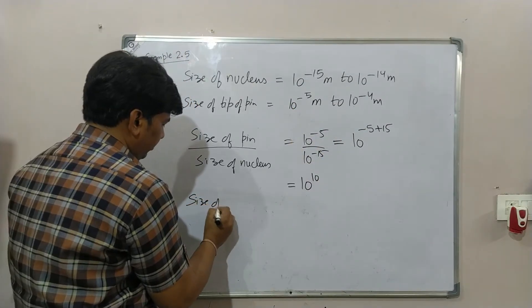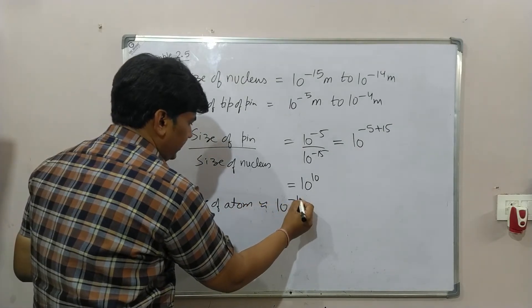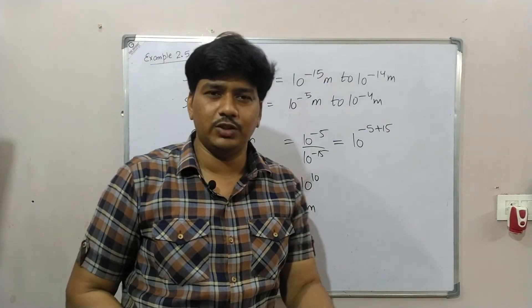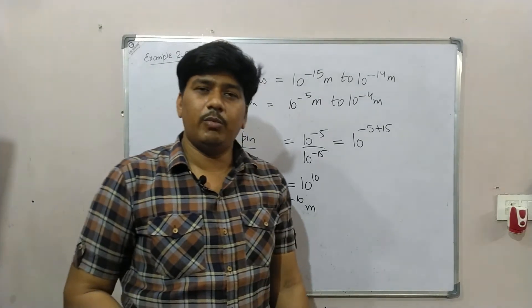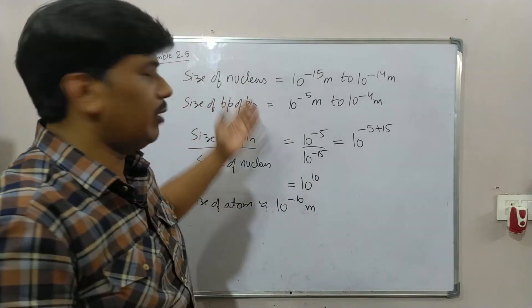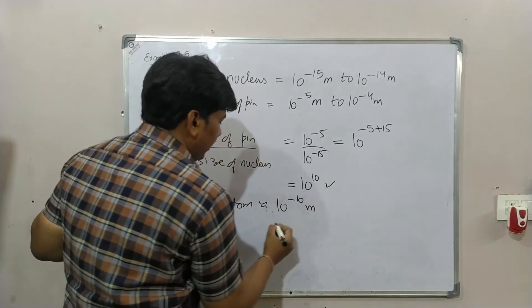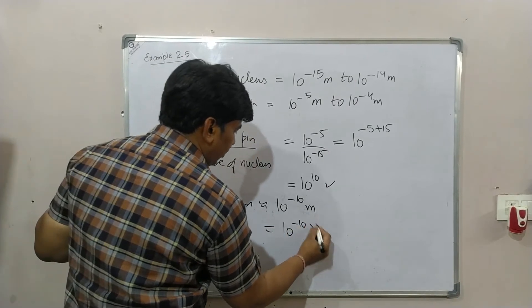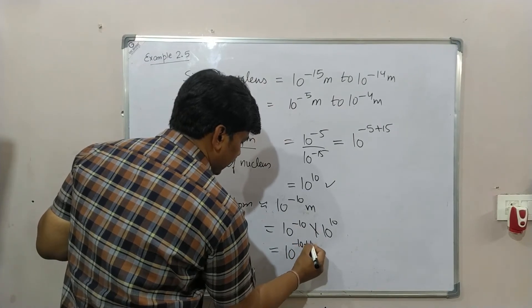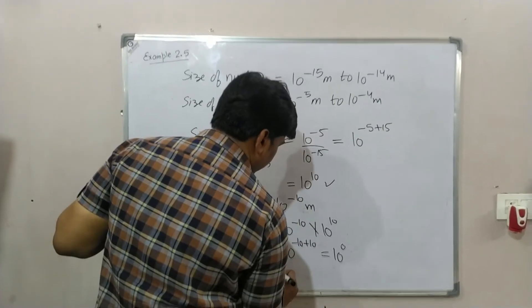Size of atom is approximately 10 to the power minus 10 meter. This is the rough size of the atom, 10^-10 m. Now you will also scale this up, the same number of times you scaled up the nucleus, 10^10 times. You will multiply 10^-10 by 10^10 and you will get 10 to the power 0, that equals 1.